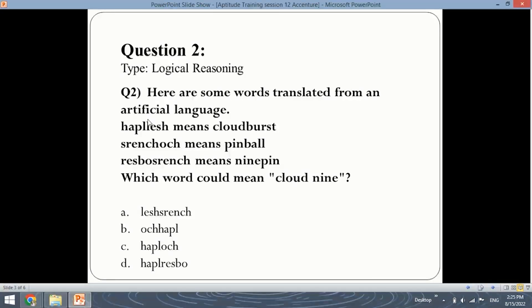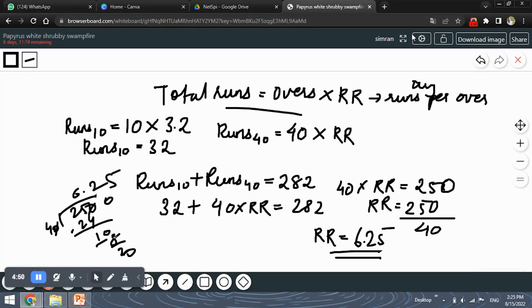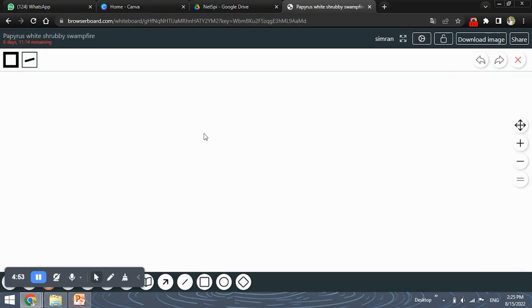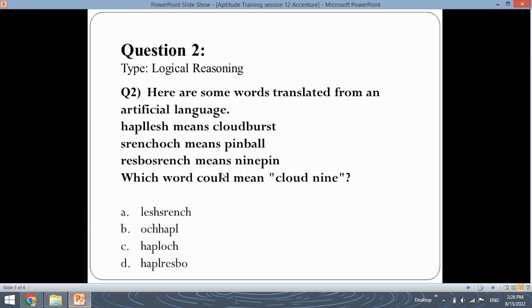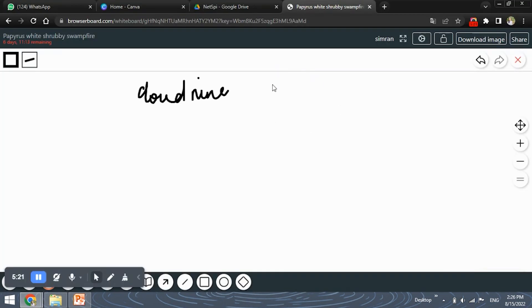So, what we will do is, we will first decode this language and check. What we need to find out is the word that will be similar to cloud nine in the given artificial language. From these options, first check in which word the word cloud is present. So, if you see cloud is present in this first sentence, the haplish. So, first let's write down cloud is present in the word haplish.